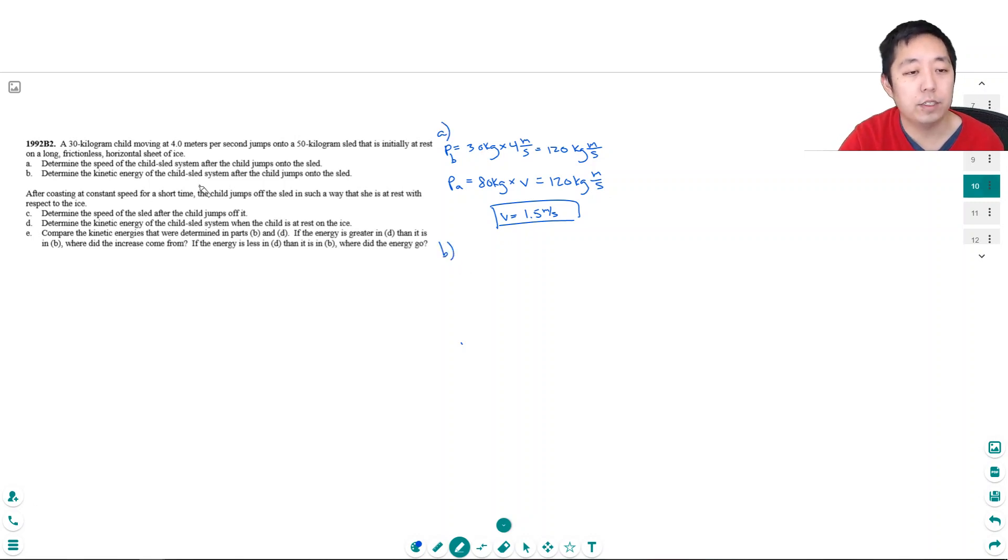B, determine the kinetic energy of the child's sled system after the child jumps onto the sled. Well their kinetic energy is 1/2 mv squared. The mass of the two together is 80 kilograms, and their velocity is 1.5 meters per second, and we square that. This is 90 joules.